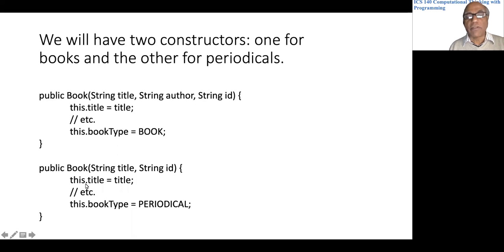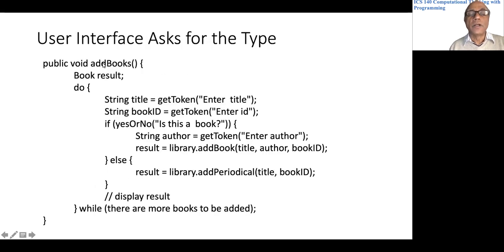This would be the code for adding books in the user interface. It asks for the title, ID, and if it is a book, it gets the author.